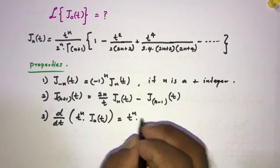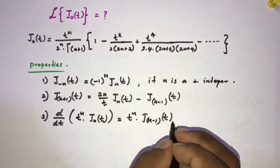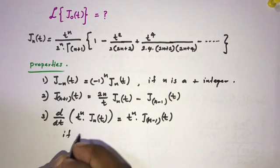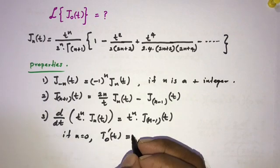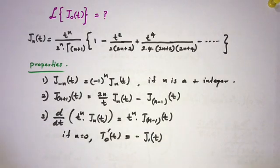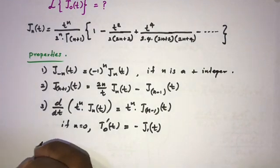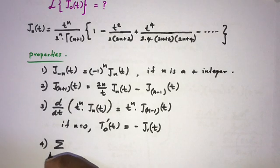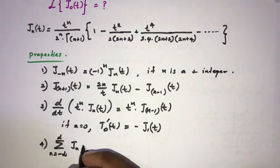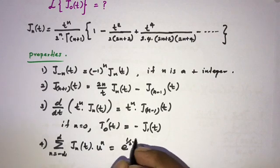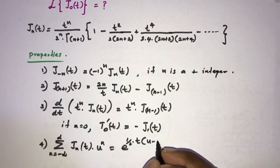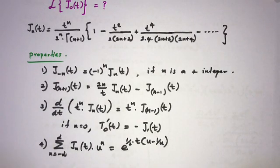Third property: when n equals zero, J_0'(t) equals minus J_1(t). Fourth property: the sum from n equals minus infinity to plus infinity of J_n(t) times u^n equals e^{(t/2)(u - 1/u)}. These are the important properties of the Bessel function.